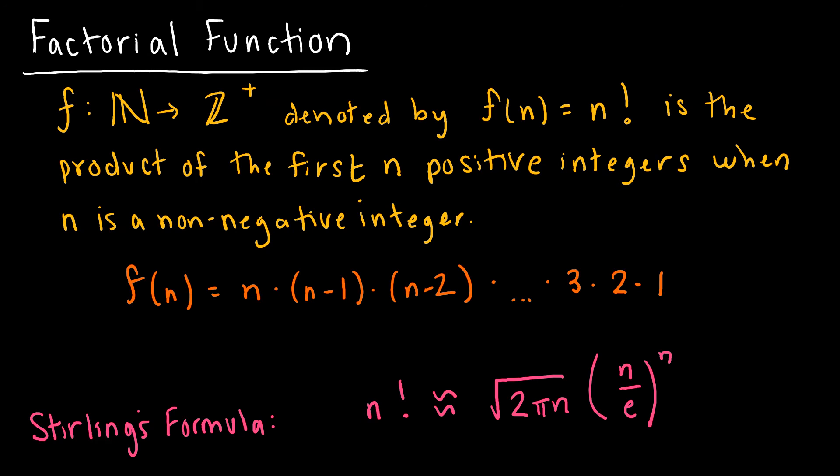And I'm certain, absolutely certain, that you've had the factorial function before. The factorial function is denoted by f(n) equals n factorial, that's the exclamation point, and it is the product of the first n positive integers when n is a non-negative integer.